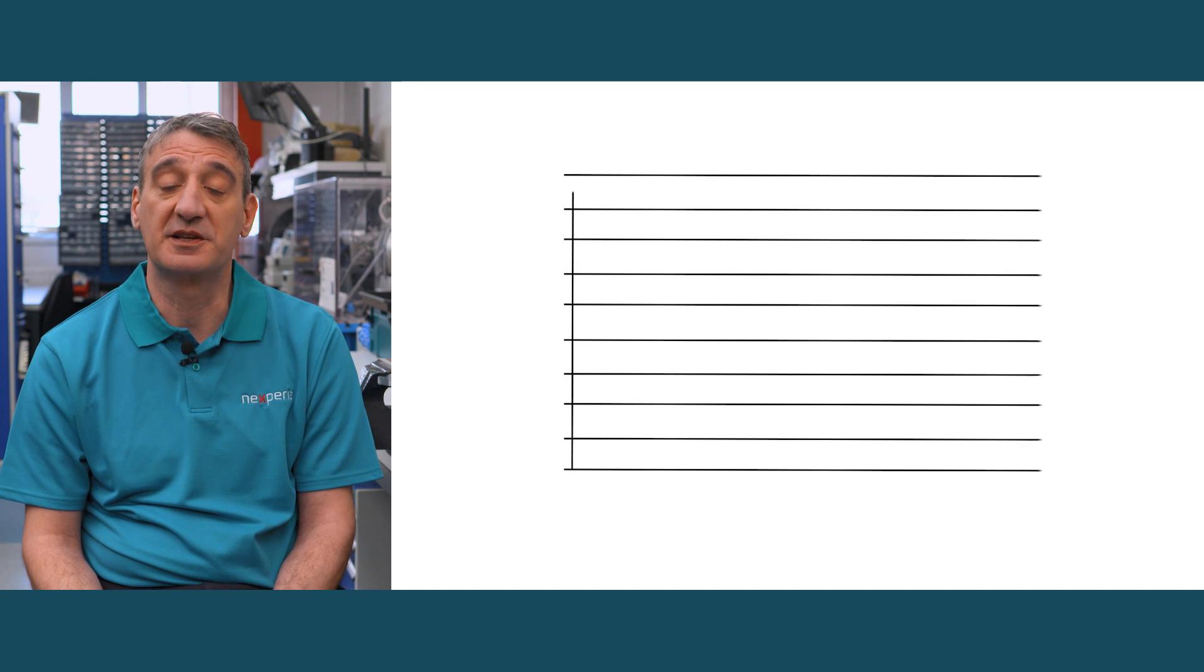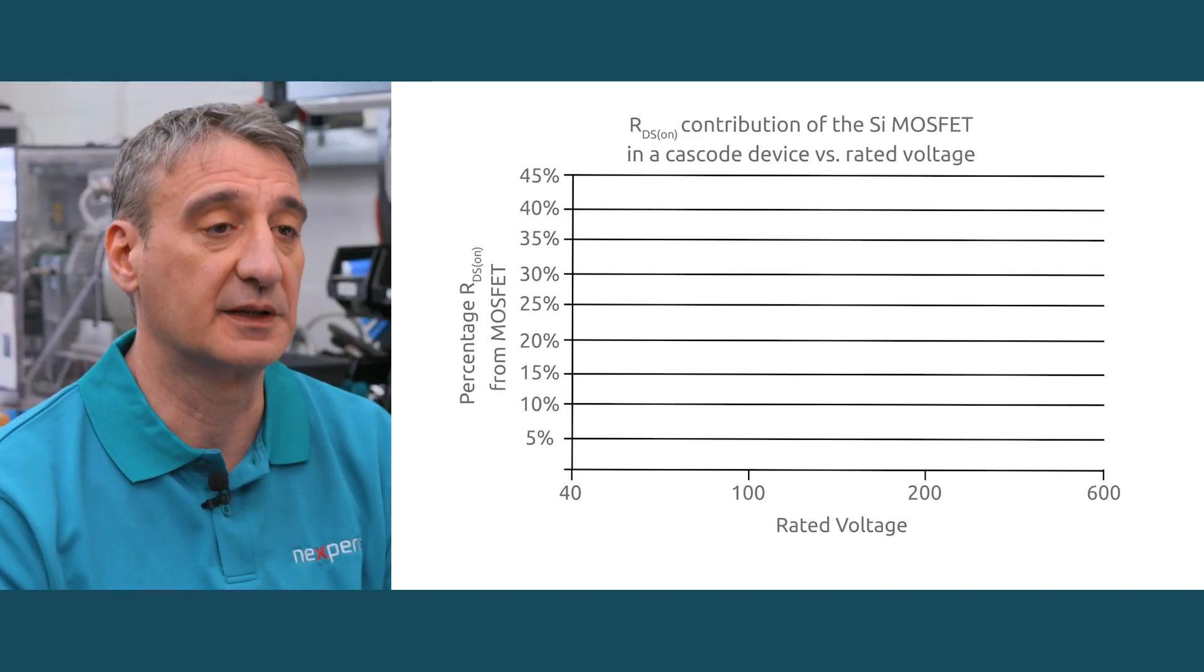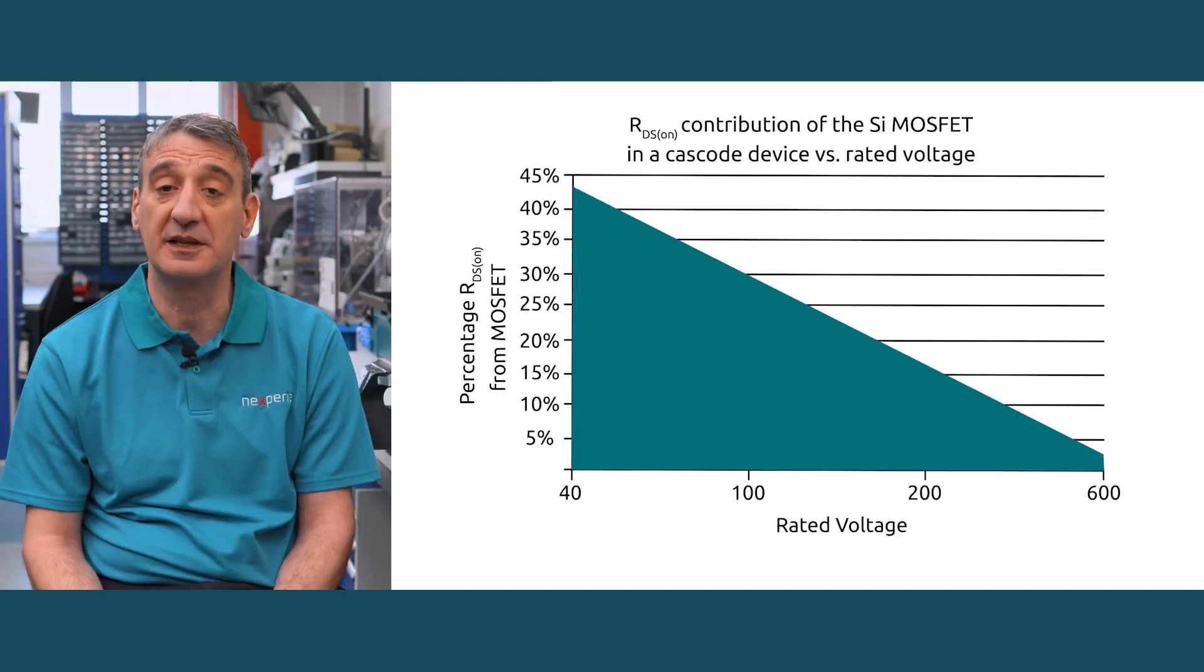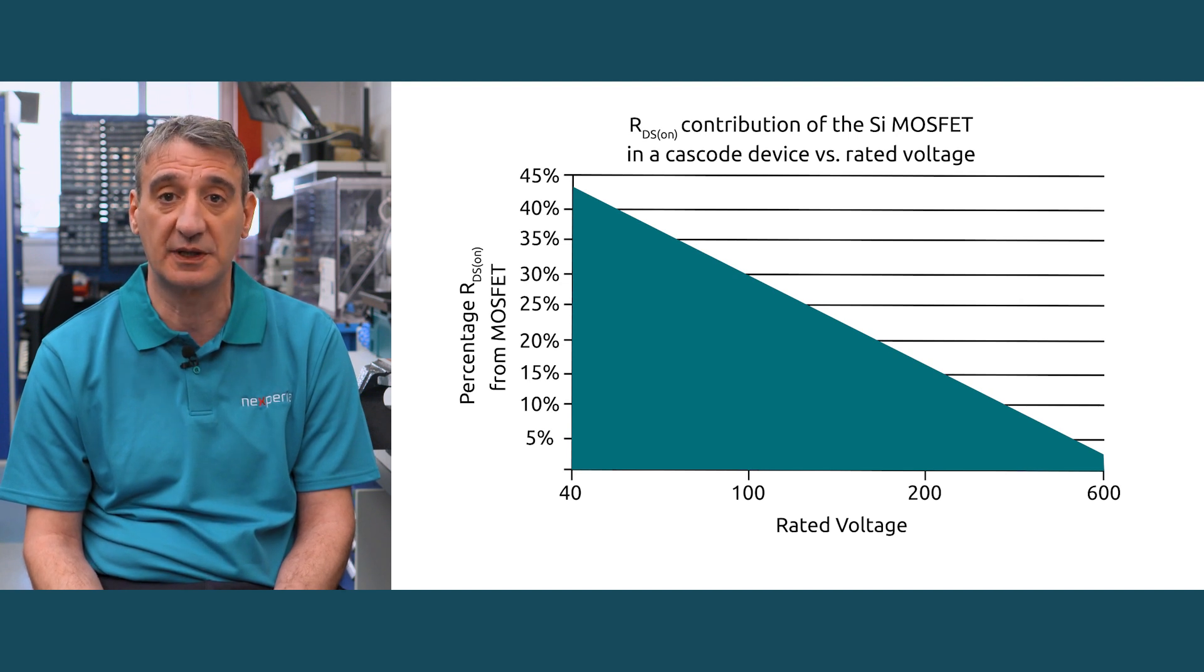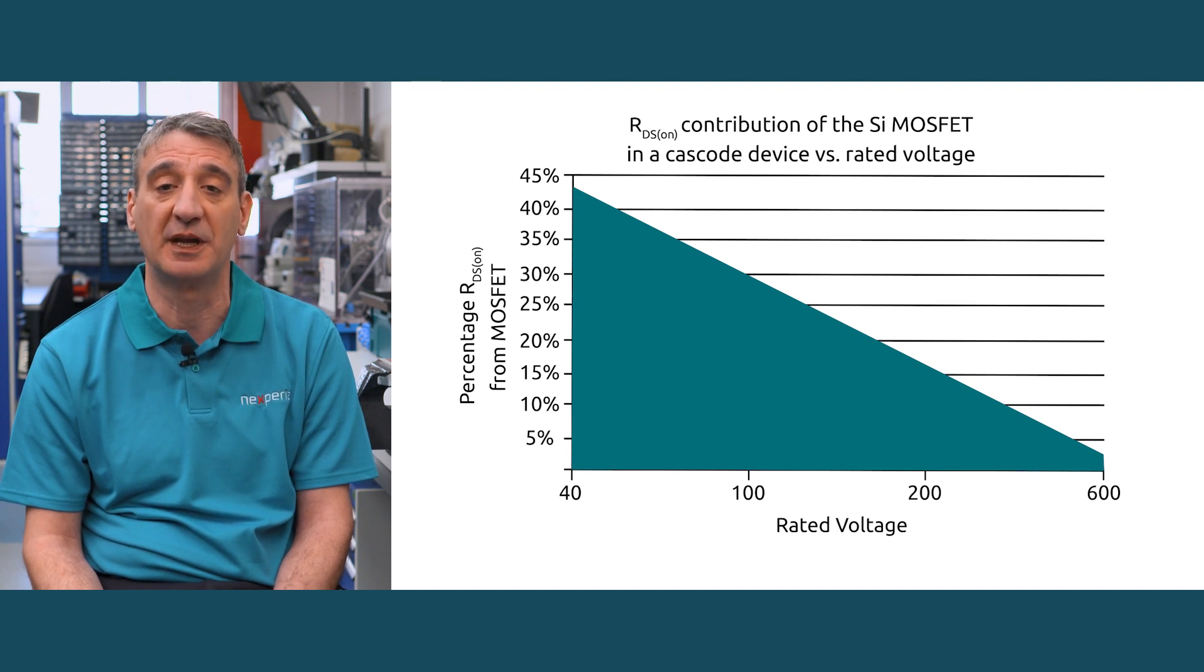Showing percentage RDS-on from MOSFET versus rated voltage, it is evident that cascode is better suited for voltages higher than 200 volts and RDS-on values below 150 milliohms.